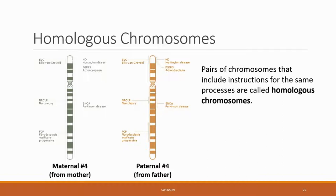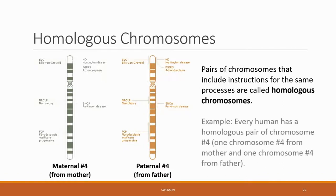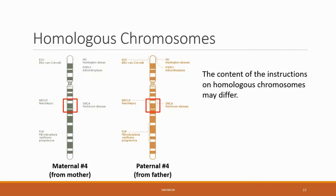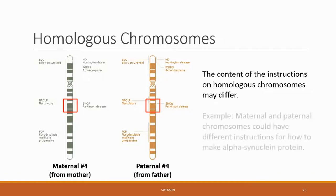Just like if you had two copies of the same book that were written down, they might not have been transcribed perfectly and might not have all of the exact same letters. But they are two copies of the same book, and that is a homologous chromosome. The instructions may work perfectly well in one homologous chromosome, but the one inherited from another parent may be defective — for example, having a defective alpha-synuclein protein may put a person at risk for Parkinson's disease.